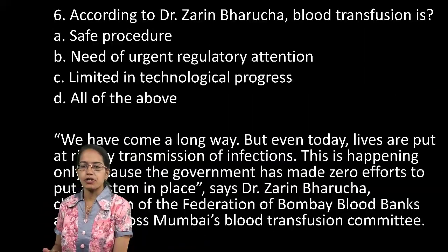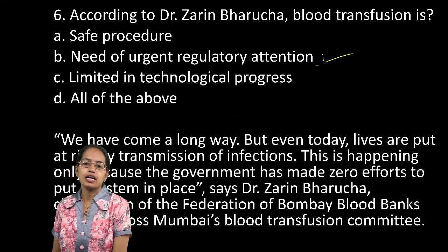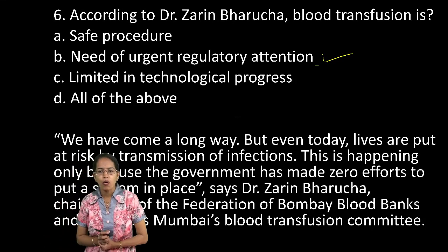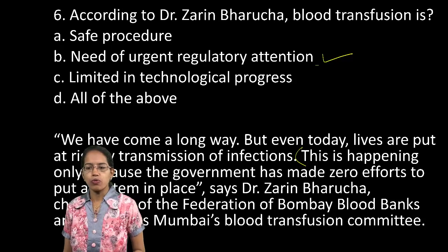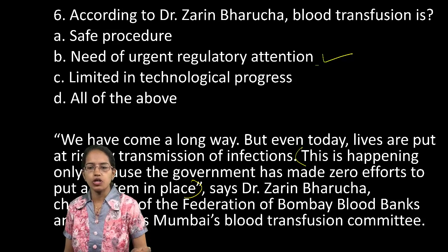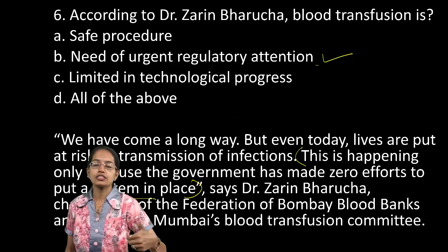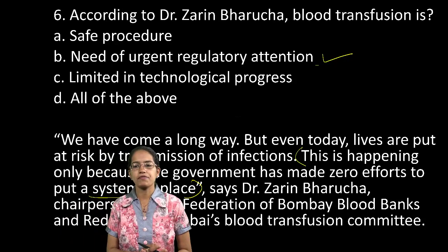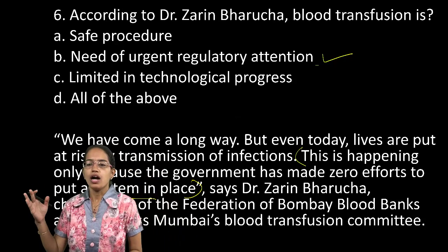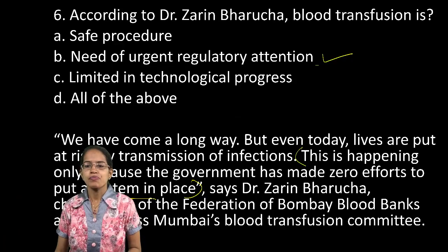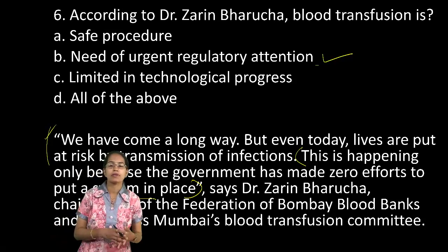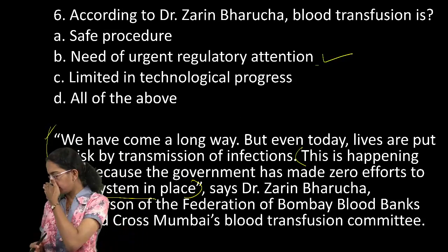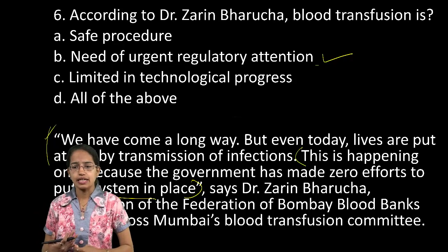Coming on to question number six. The urgent need for regulatory attention is important because the second sentence clearly says this is happening only because the government has made zero efforts to put a system in place. Since there is no effort by the government, we can say there is a need for urgent regulatory attention to check out the risk by transmission that could take place. B is the correct answer.